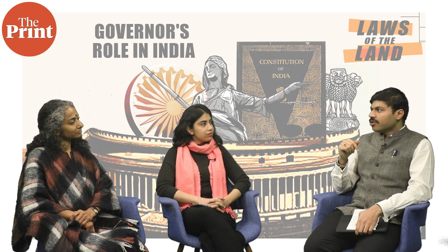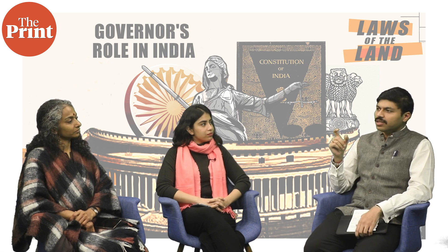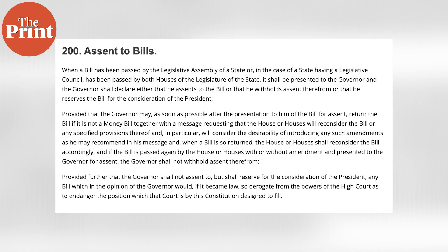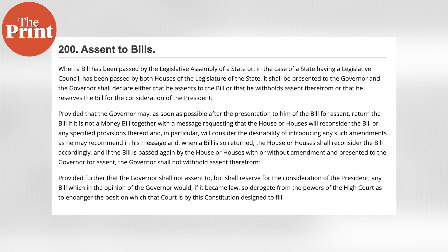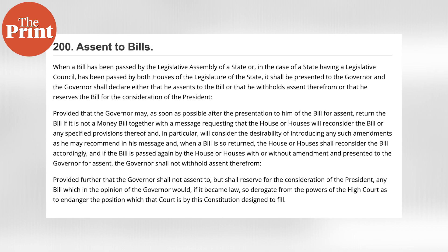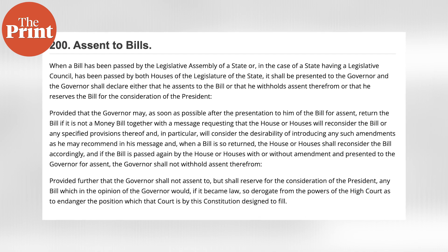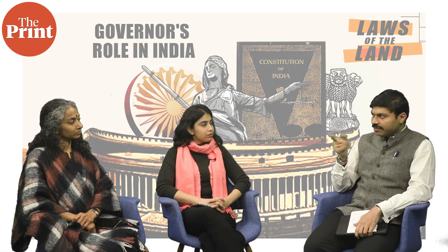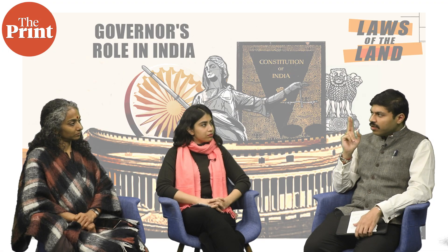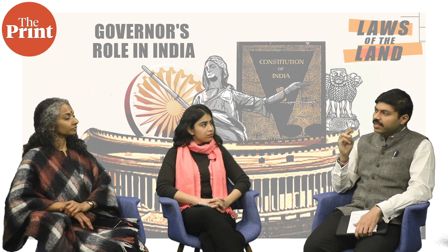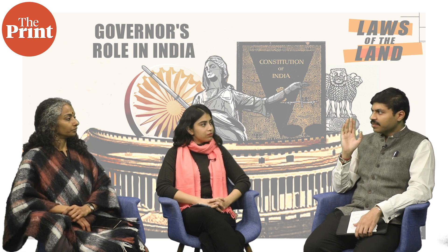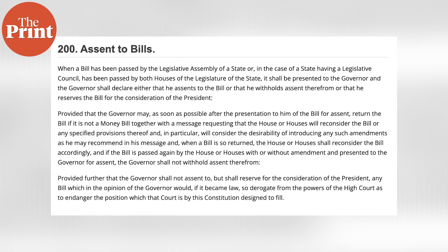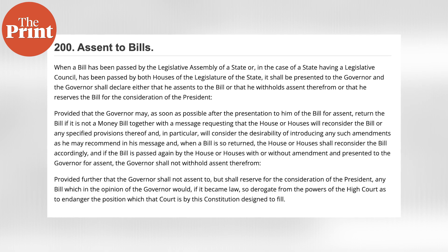There's another important role to discuss — the governor's power to give assent to bills. Article 200 of the constitution is very important here. Article 200 says that once the legislative assembly passes a bill and sends it for his assent, the governor can either give assent, withhold assent, or send it to the president for recommendation. These are the three options under Article 200.